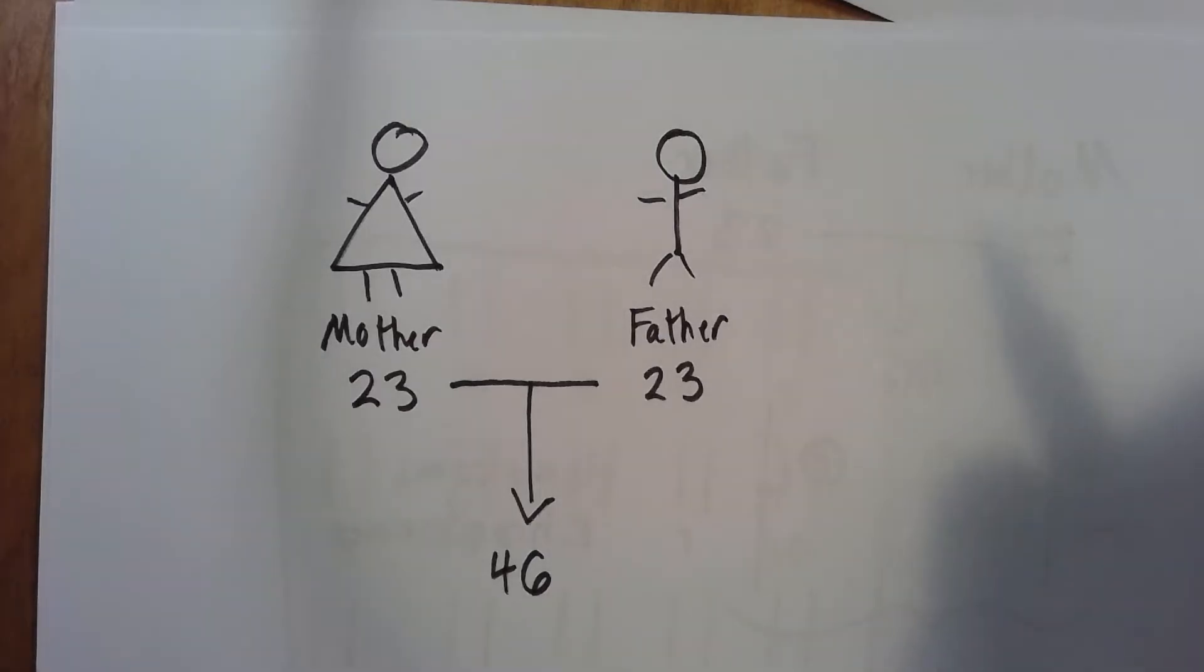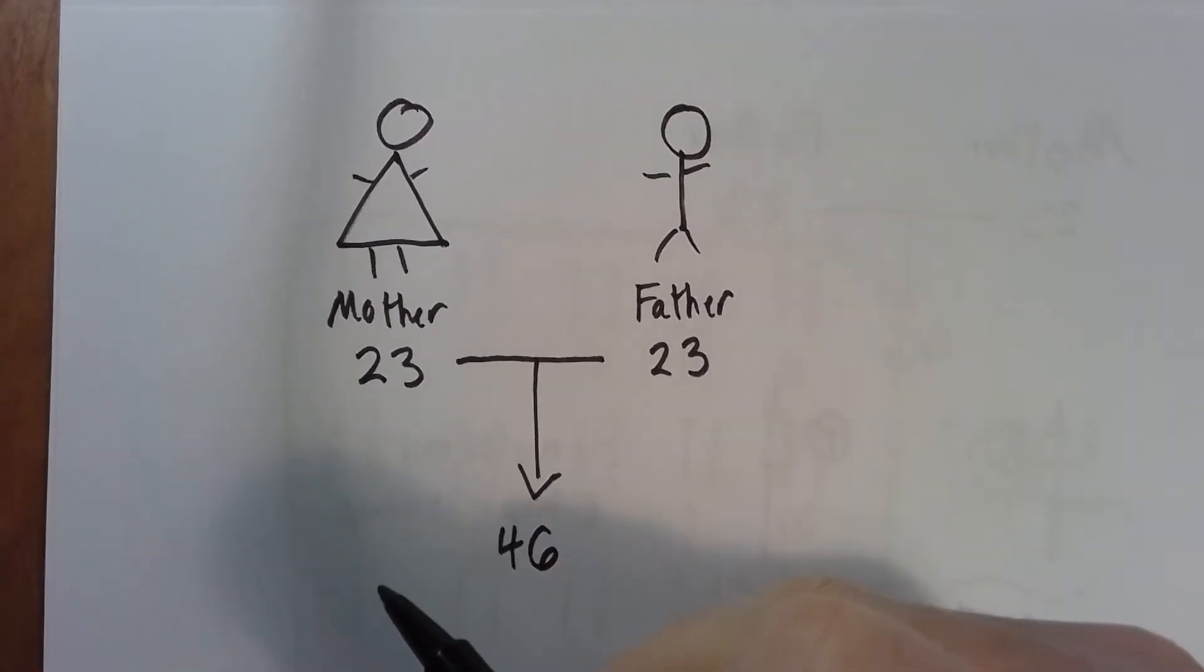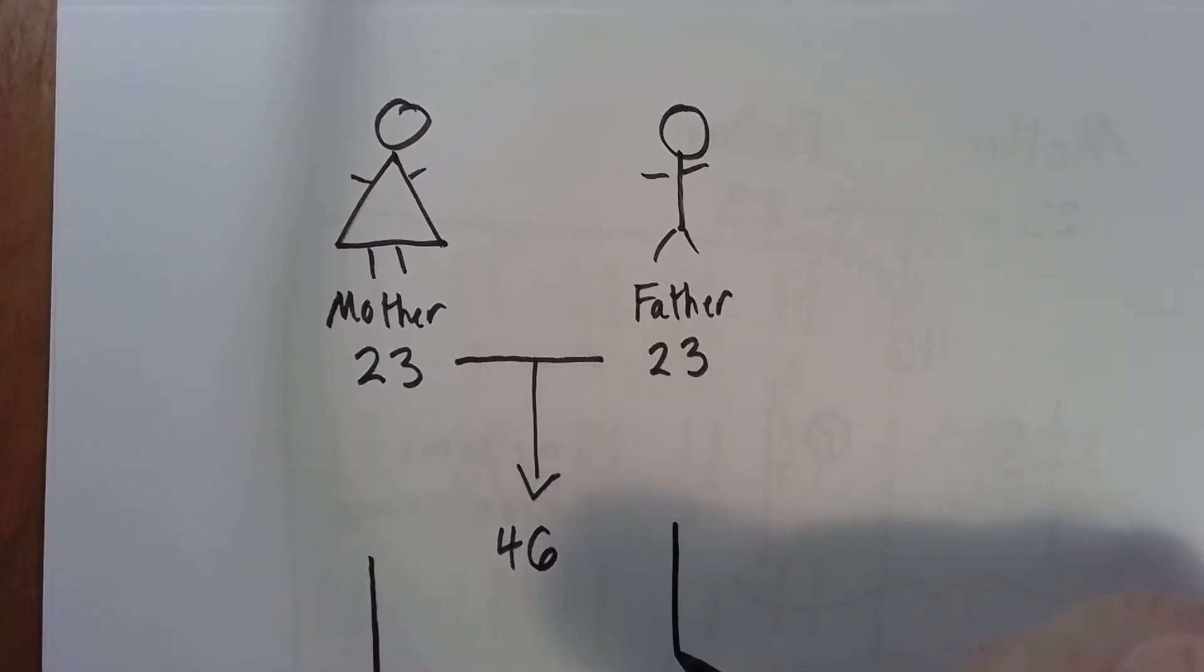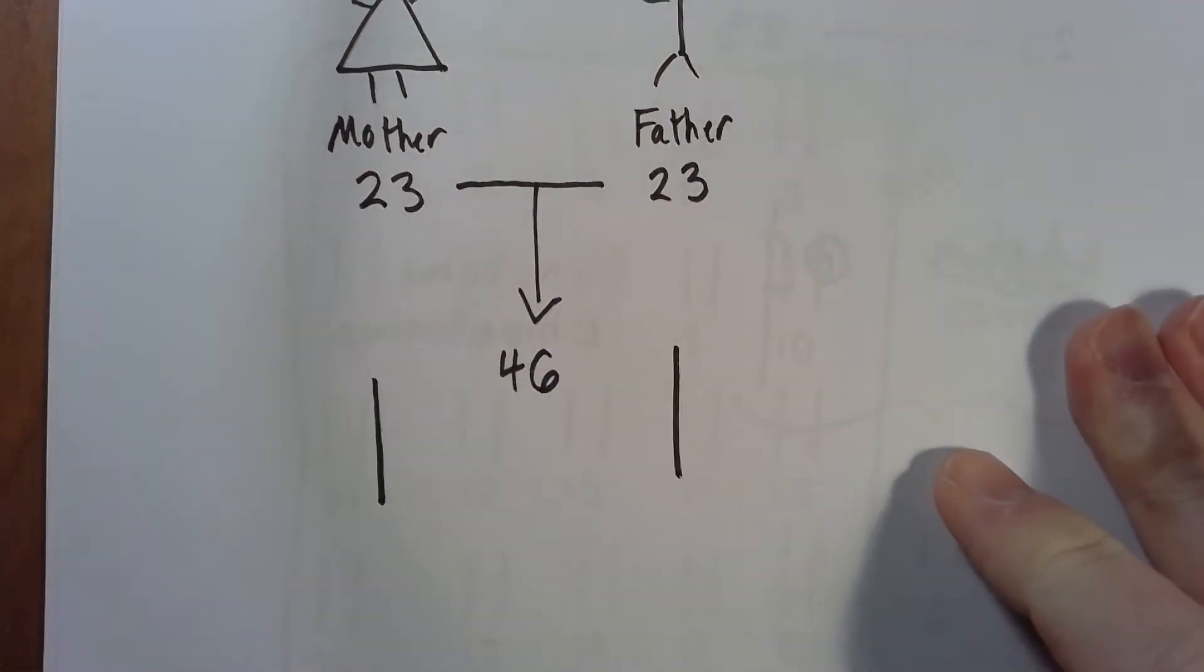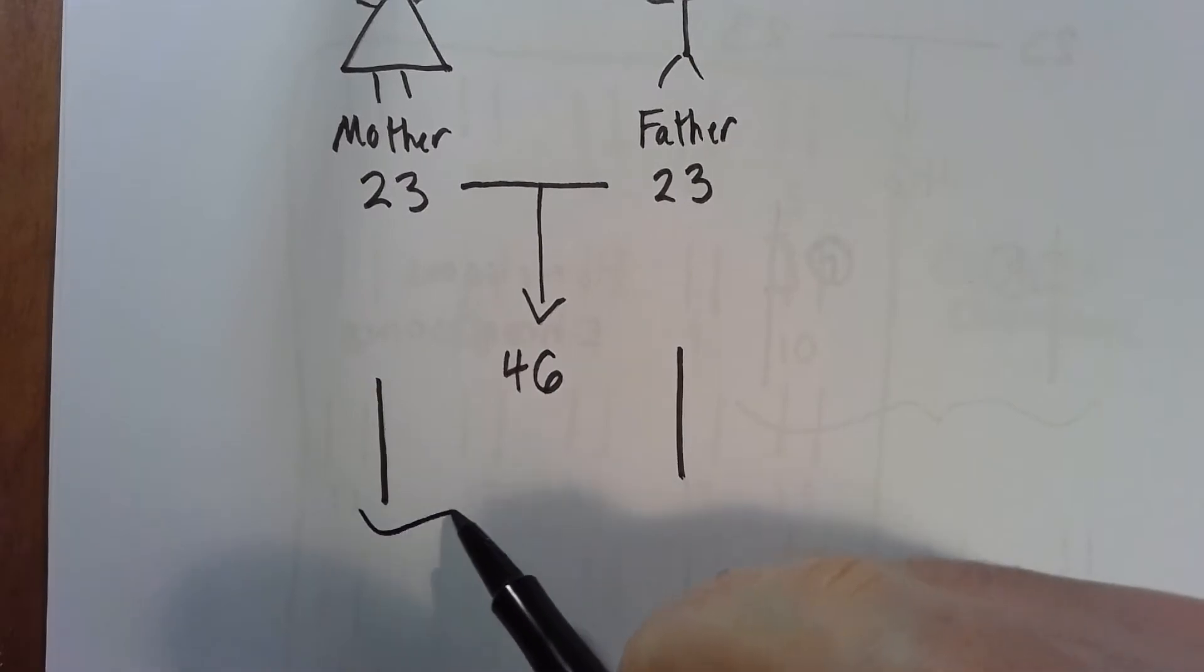Your mother will give you 23 chromosomes, your father will give you 23 chromosomes, to give you a total of 46 chromosomes. Each of these chromosomes, they're in a pair. So the mom gives you one, dad gives you one, and there is your pair of chromosomes. You have 23 pairs.